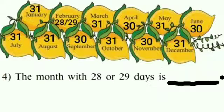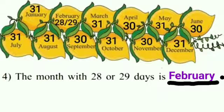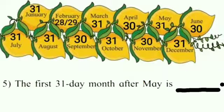Our fourth sentence: the month with 28 or 29 days is dash. Which is that month, children? Very good, February. So we will write February in the given space. Our fifth sentence: the first 31-day month after May is dash.